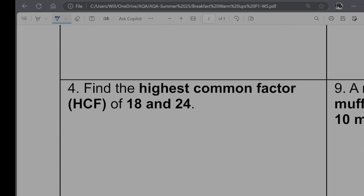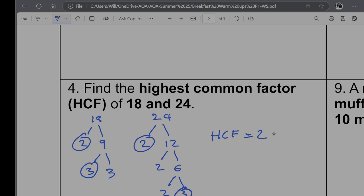Question four. Find the highest common factor (HCF) of 18 and 24. So 18, if I break it out of a factor tree, would be 2 and 9, which would be 3 and 3. And 24, in a similar fashion, I'm going to say is 2 and 12, which is 2 and 6, which is 2 and 3. So the highest common factor is the multiplication of the factors that they have in common. So they have a 2 in common, they have a 3 in common. So my highest common factor is going to be 2 times 3, which would give me 6.